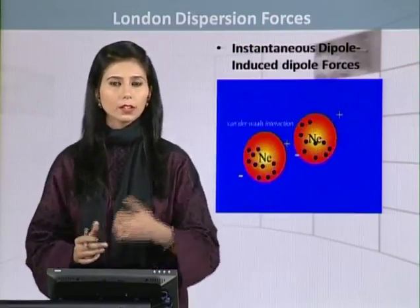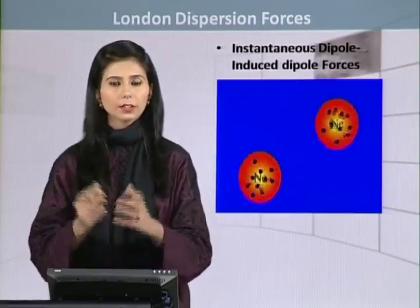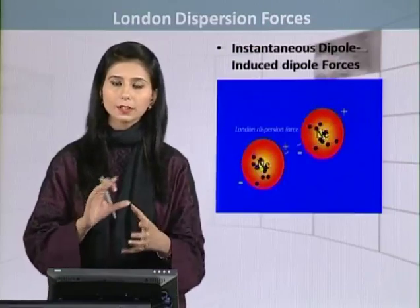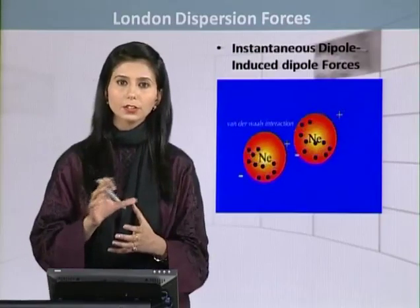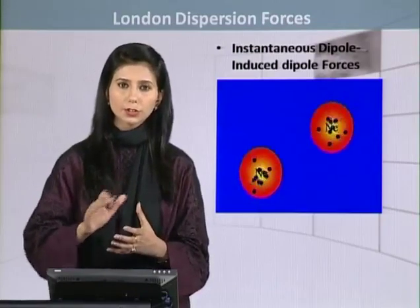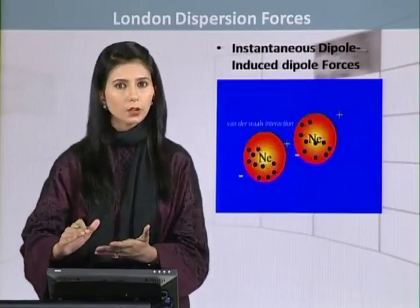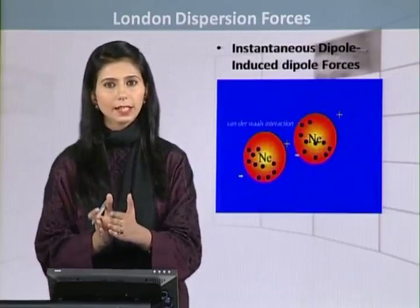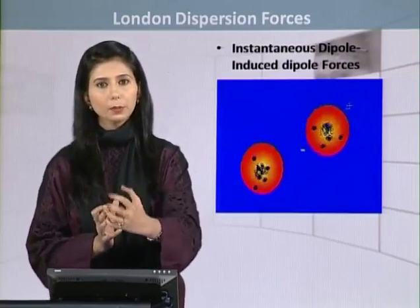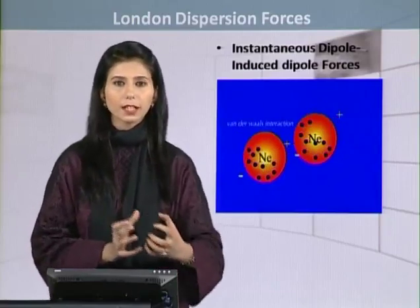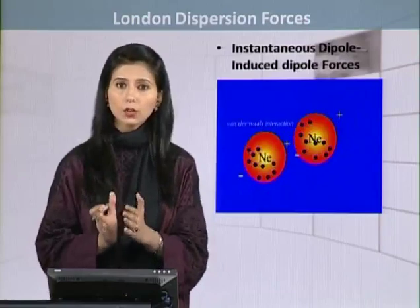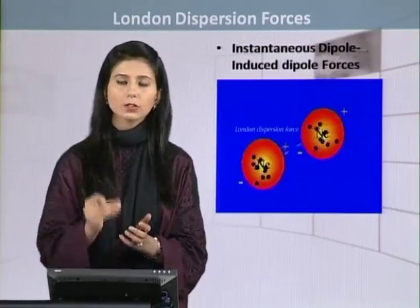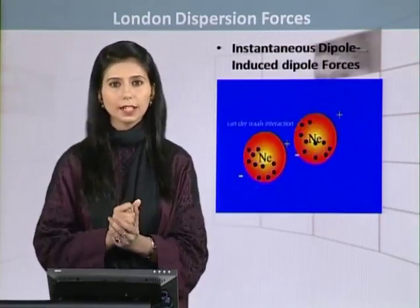Here we have an animation showing two neon atoms. Neon is a noble gas — it had symmetric sharing of electrons, but this symmetry is no more; the symmetric distribution is disturbed. The charges are not balanced — it is more positive on one end, more negative on the other end. Though this is very momentary, this is why it is called an instantaneous dipole.